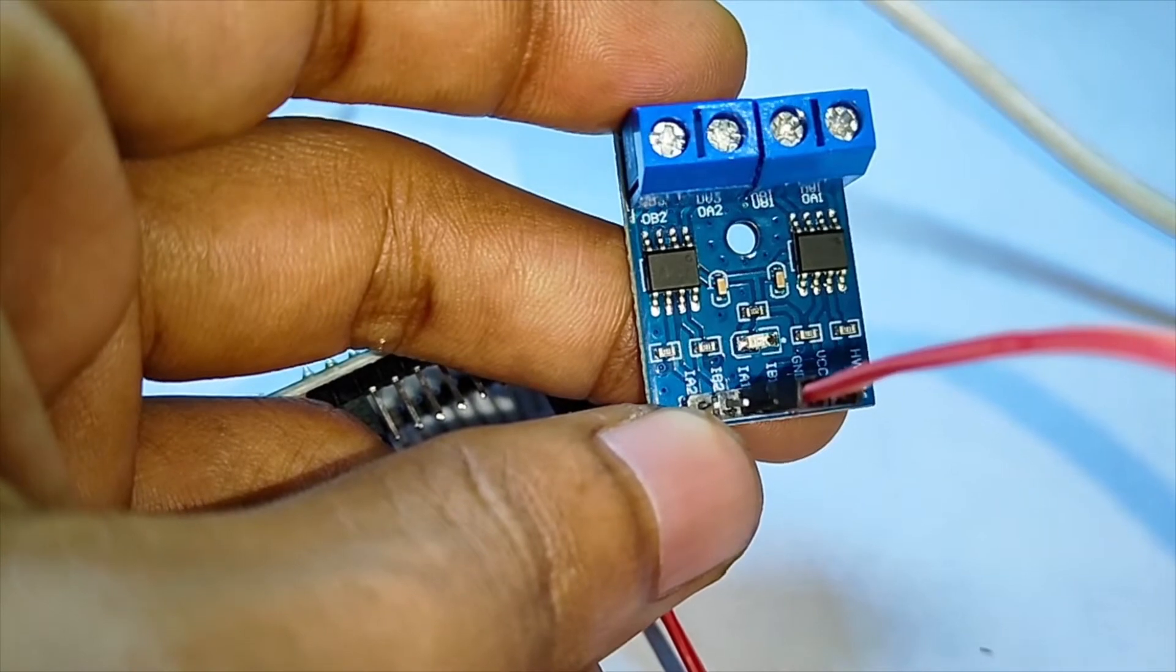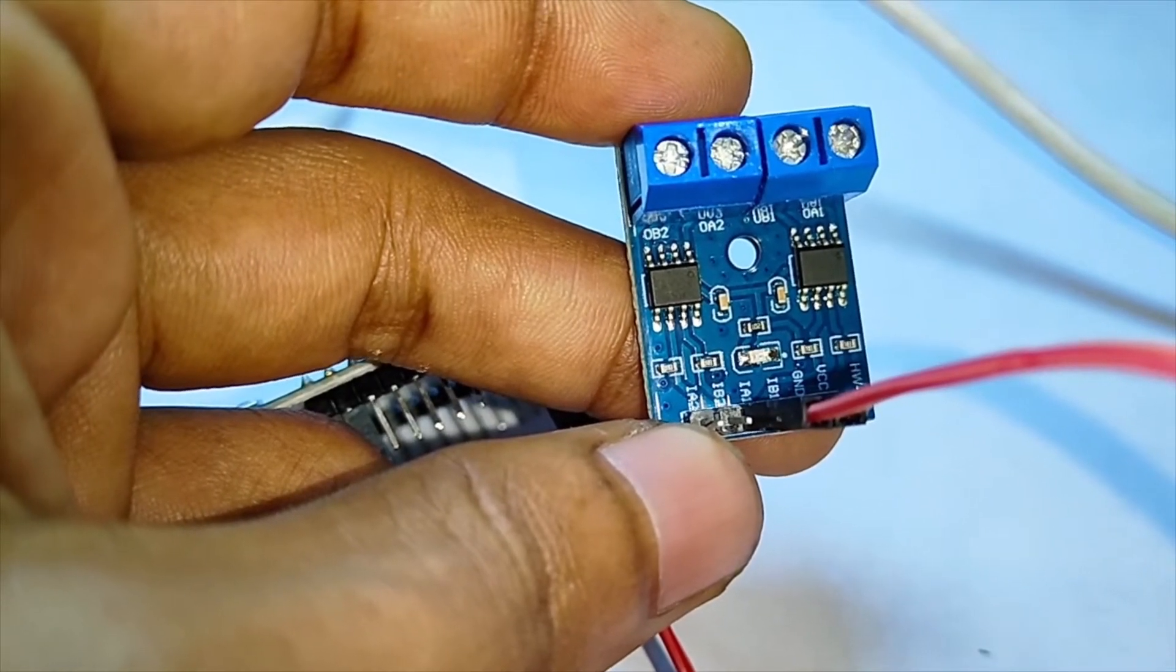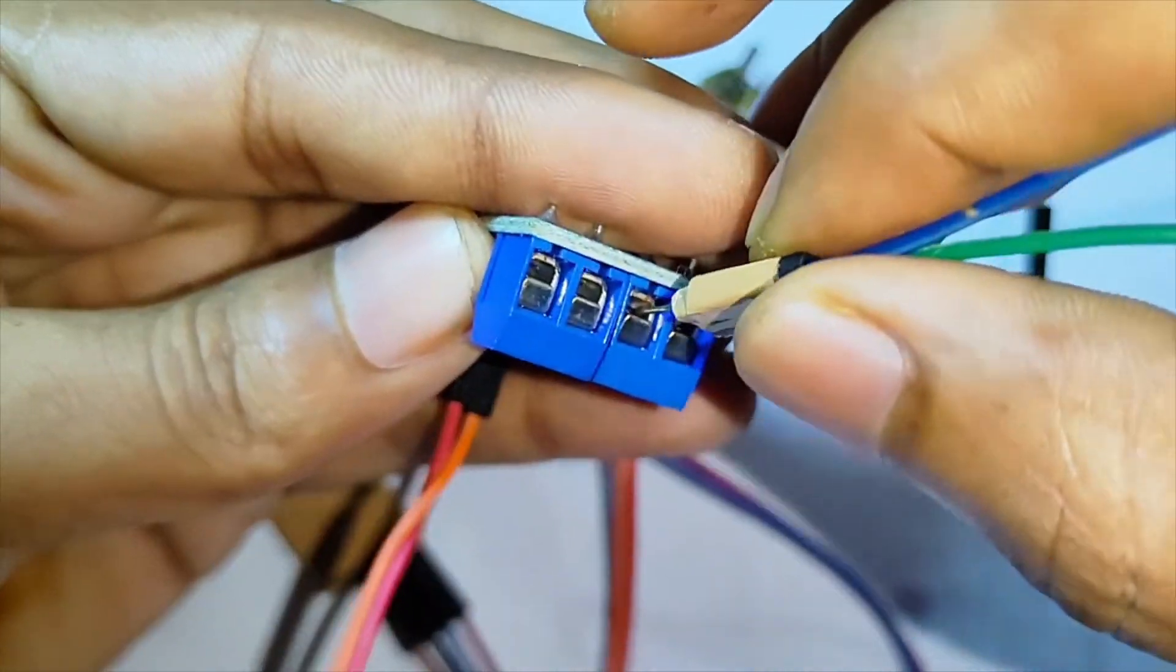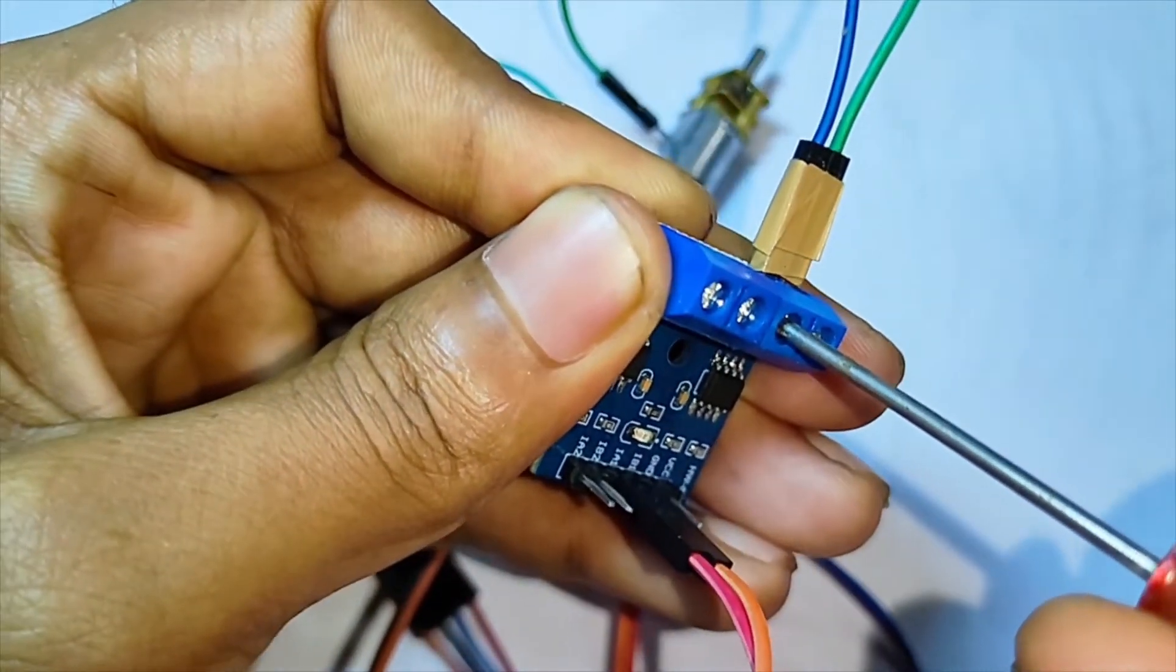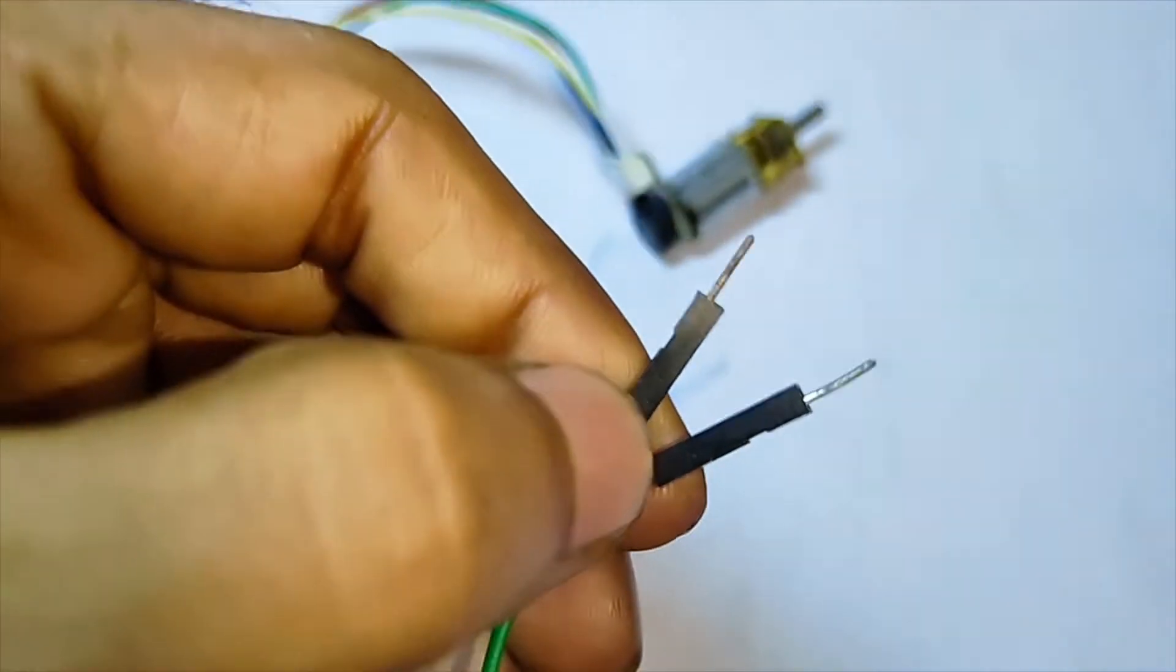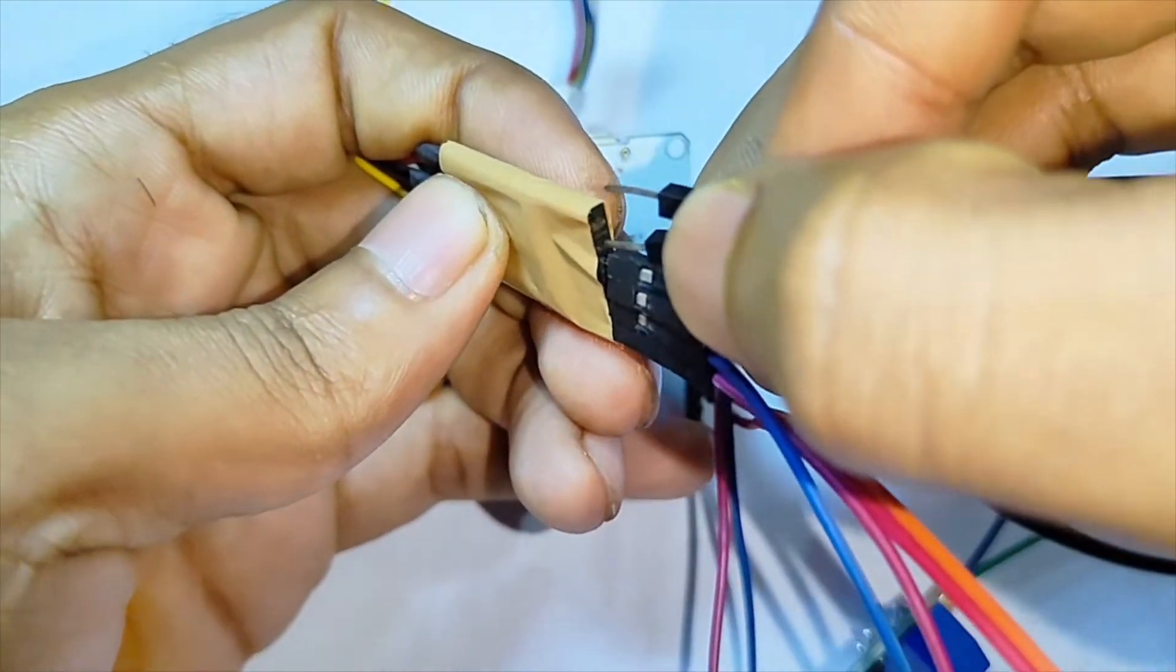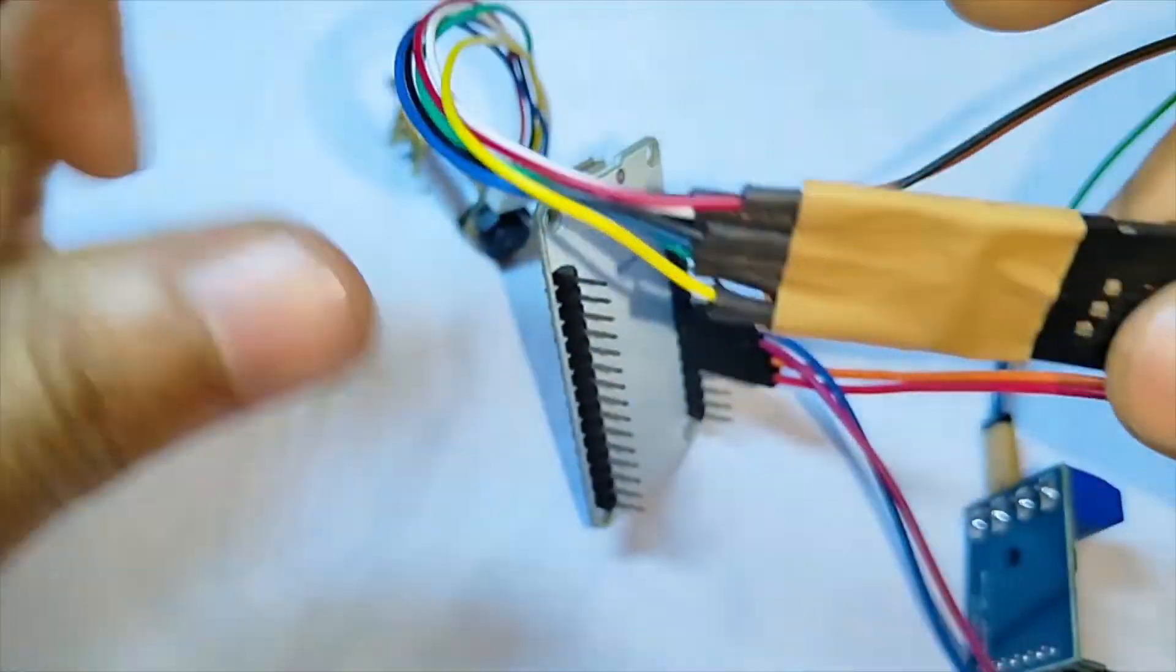I am going to connect the 0B1 and 0A1 pins of the L9W10 with the M1 and M2 pins of the N20 encoder motor. So, I am going to connect these pins to the N20 motor.